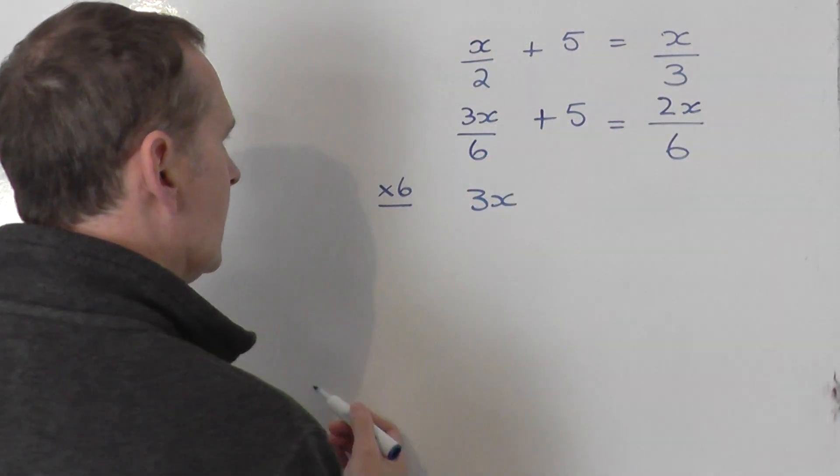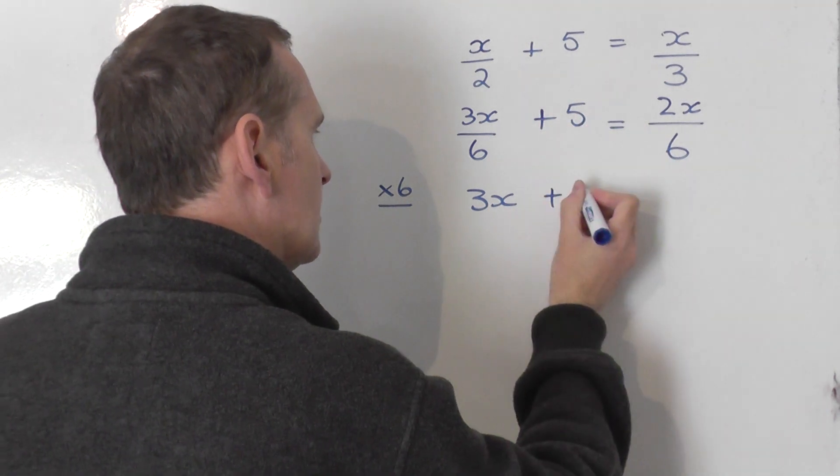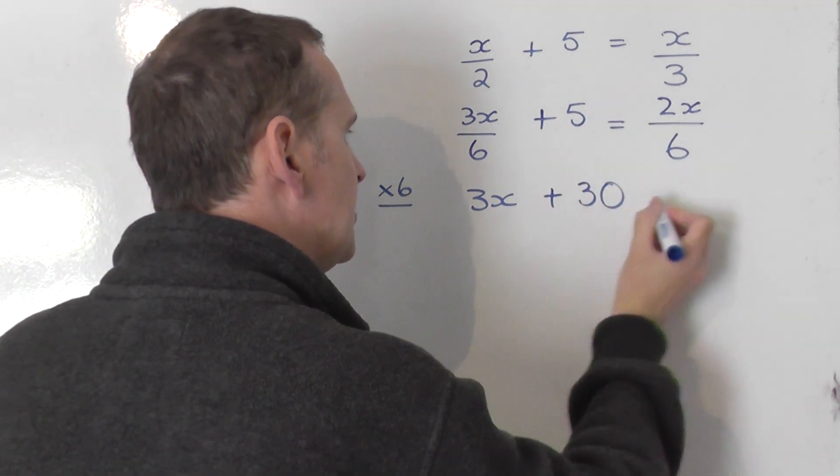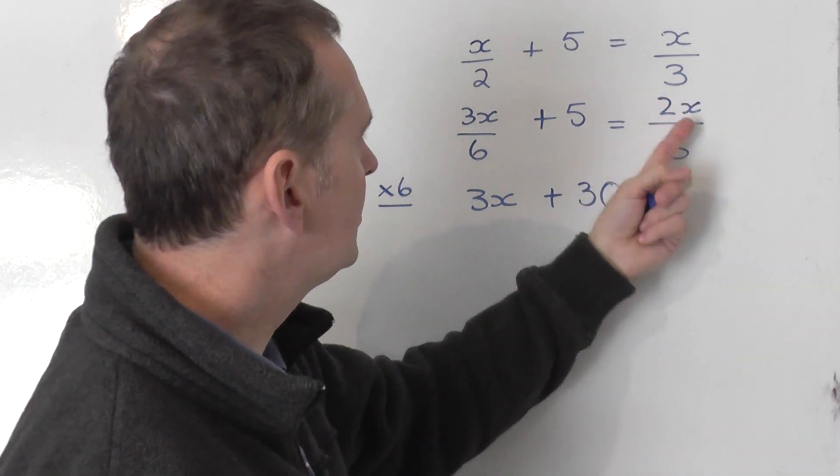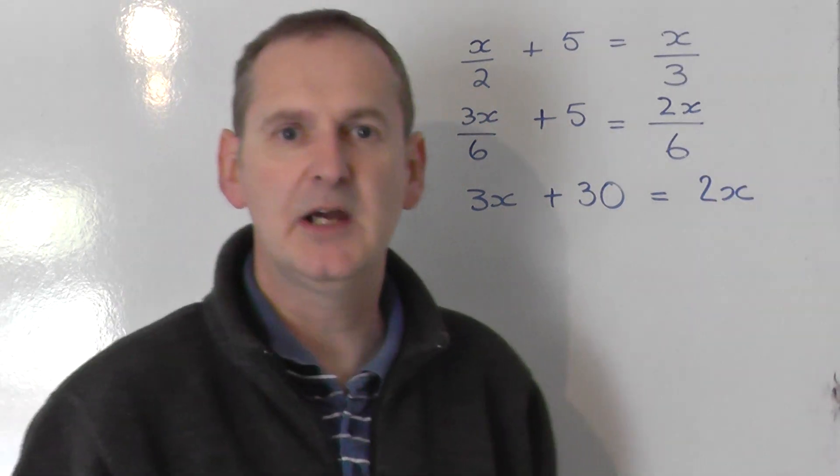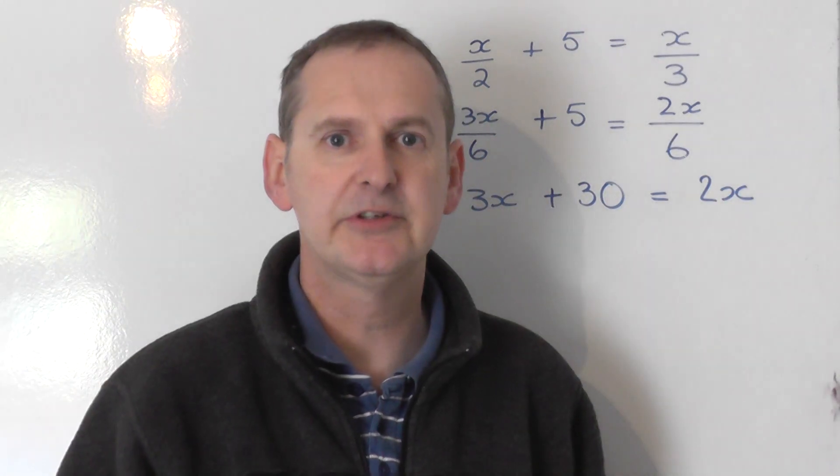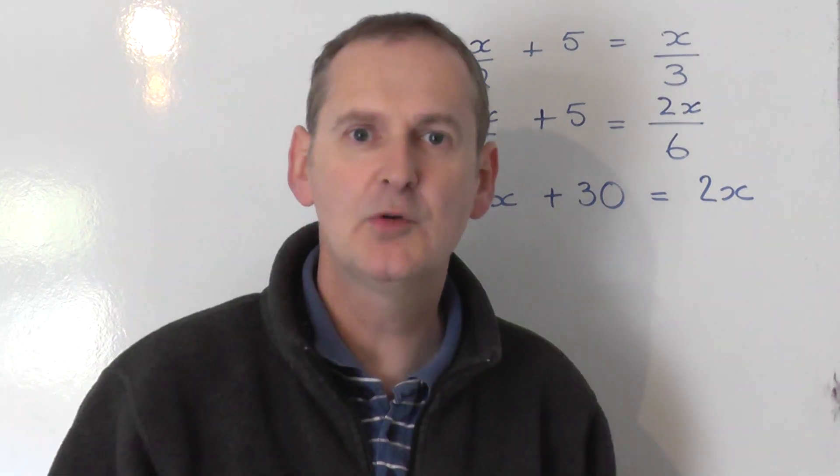Okay, so I've times that by 6. To keep this a true statement, then, I must times that by 6. Well, 5 times 6 is 30. I now times this by 6. Well, 2x share by 6. If you times it by 6, you just get the 2x, so the 6 just disappears from the bottom. So, we end up with all the fractions totally disappearing.